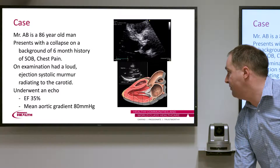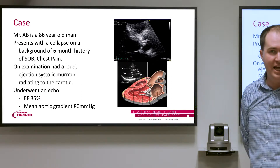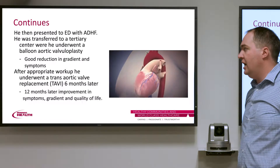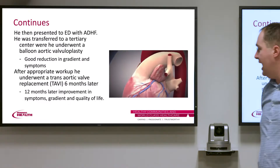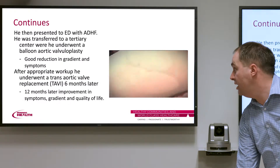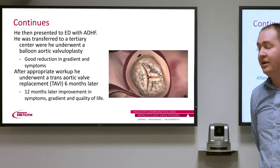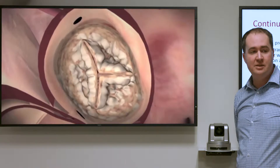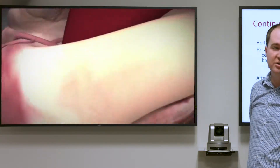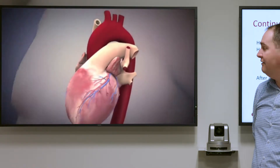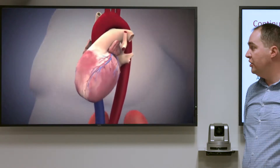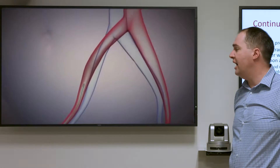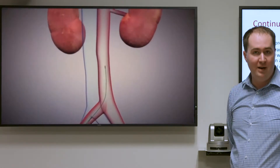The lower picture shows that valves should normally be nice and thin, but here they're quite thickened and abnormal. He was initially seen in clinic and the process was started for an aortic valve replacement. Unfortunately, as often happens with these patients, he then presented to the emergency department with acute decompensated heart failure and was transferred to a tertiary centre.